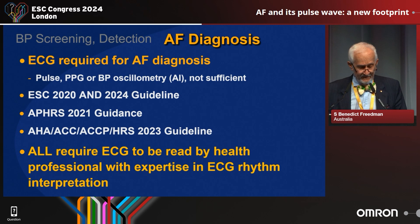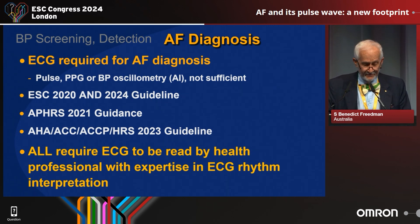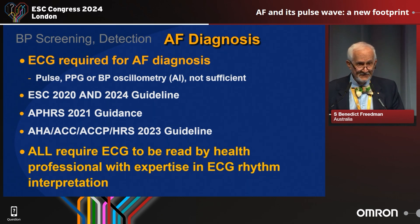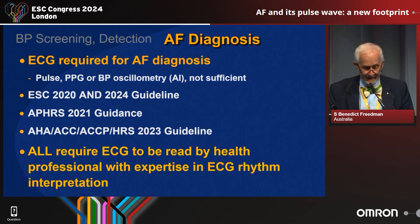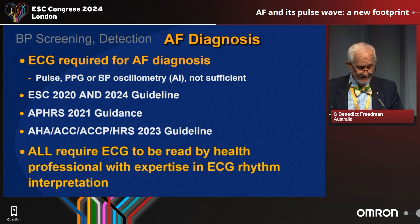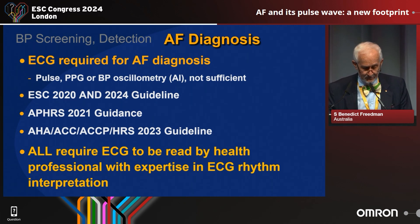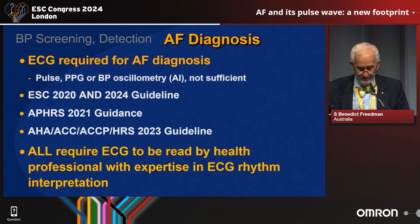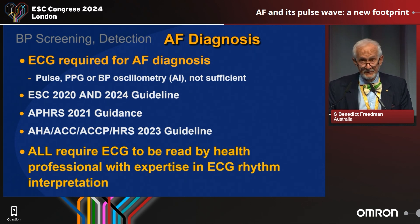The ECG we know is still required for AF diagnosis — either through pulse PPG or BP oscillometry, it's not quite sufficient to make a confident diagnosis. This is true in the guidelines of the ESC 2020 and 2024, the Asia Pacific Heart Rhythm guidance in 2021, and the American Heart Association/American College guideline in 2023, all of which require an ECG to be read by a health professional with expertise in ECG rhythm interpretation.